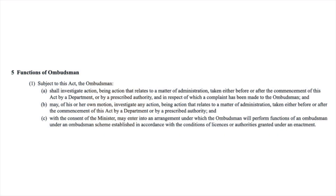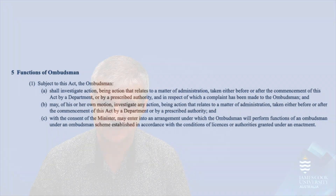Section 5 of the Ombudsman Act sets out the functions of the Ombudsman. There are two super interesting aspects of this section that I want to talk about. The first one is that subsection 1A gives the Ombudsman the right to investigate an action that relates to a matter of administration. At first it might not be obvious why this matters, but it's so much broader than the ADJR Act.